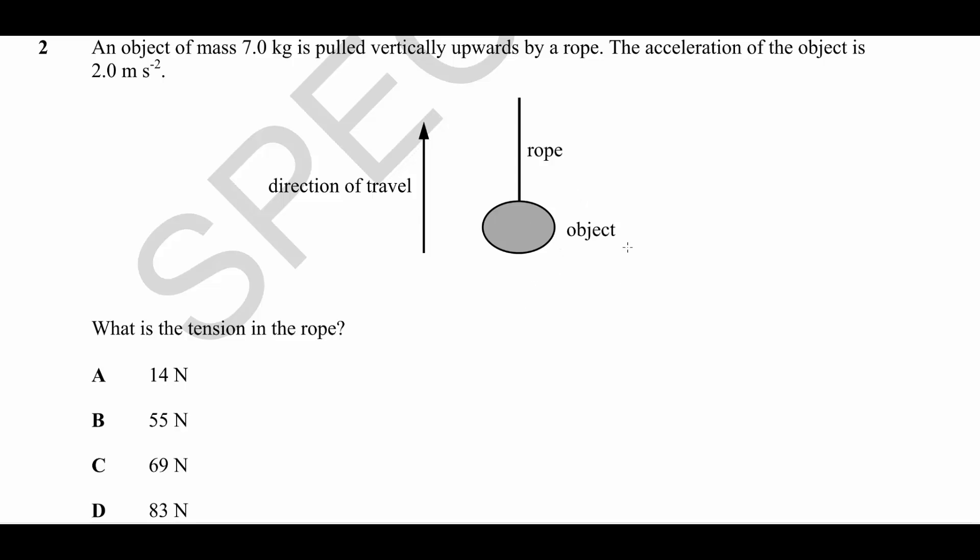So I would approach this problem first by sketching a diagram. There's already one here, but let's just add our own free body diagram here, representing the forces acting on the object. If we know that the mass is seven kilograms, so therefore we know that it has a weight acting down equal to mg.